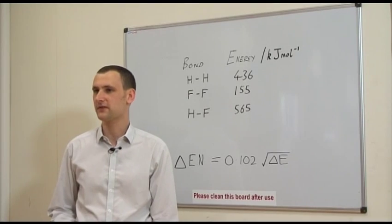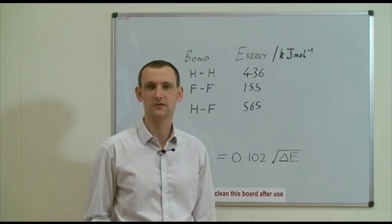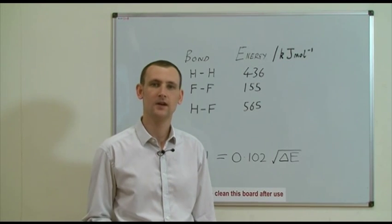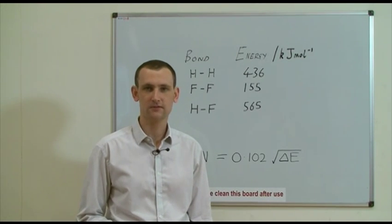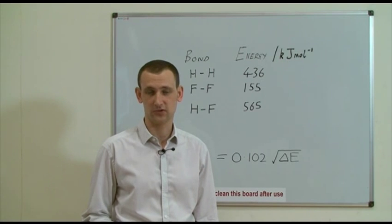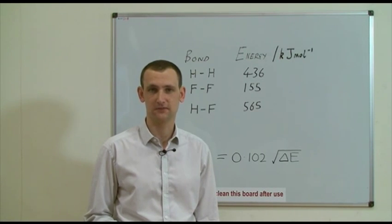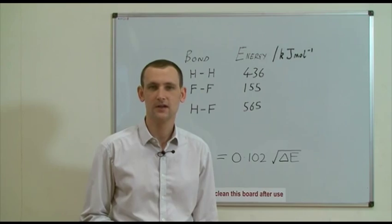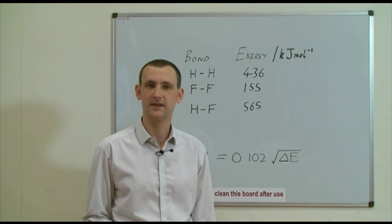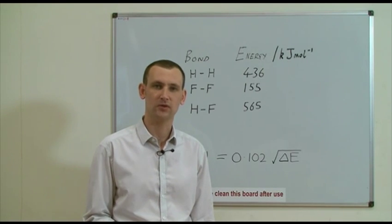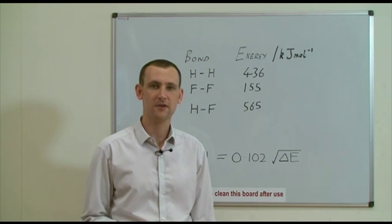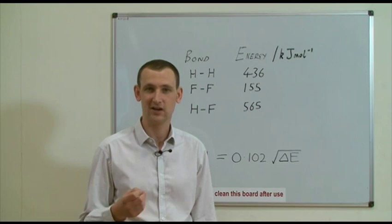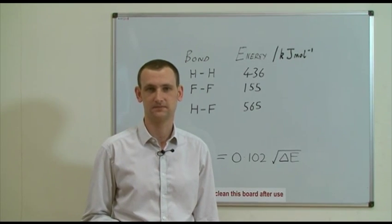In order to come up with his scale, Pauling used thermodynamic data. If we consider a heteroatomic bond, for example the HF bond, which has a bond strength of 565 kJ per mole, we find that the bond strength is much higher than either the H–H bond at 436 kJ per mole, or the F–F bond at a mere 155 kJ per mole.